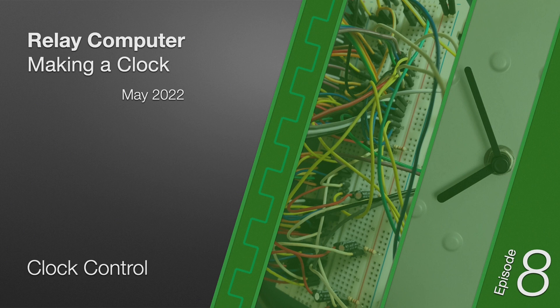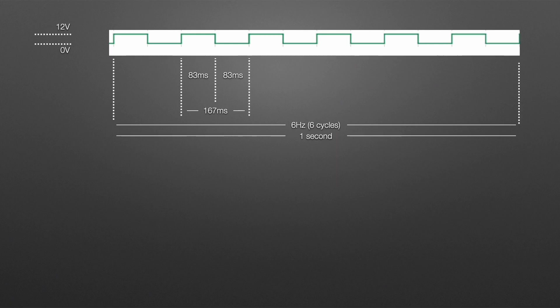Here's what I was trying to achieve: a nice steady clock signal that flips on and off. 83 milliseconds on, 83 milliseconds off, repeating the cycle every 167 milliseconds, which means that after 6 cycles, 1 second has elapsed in real time. Or in other words, a 6Hz clock signal.